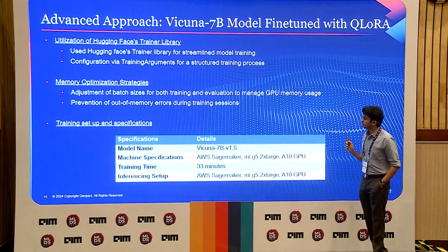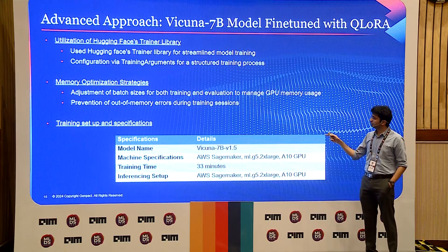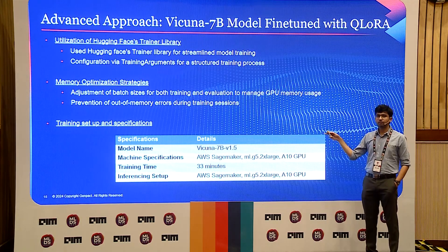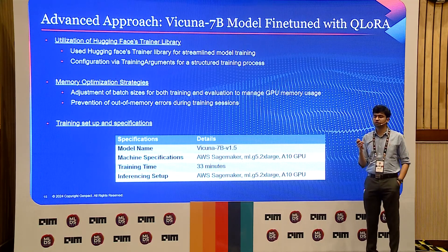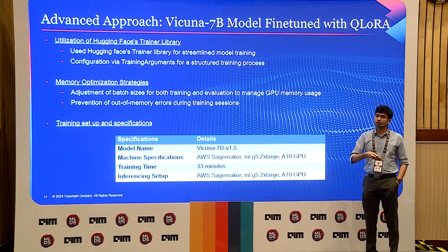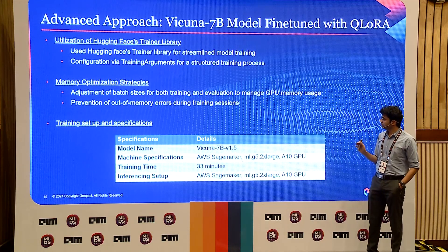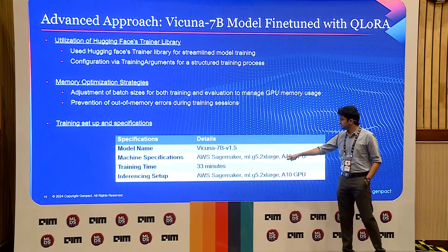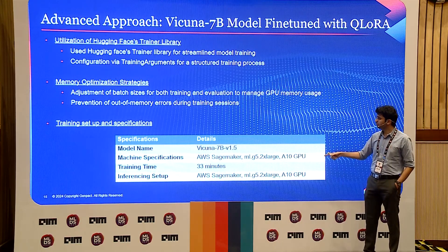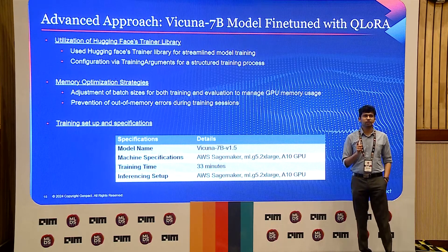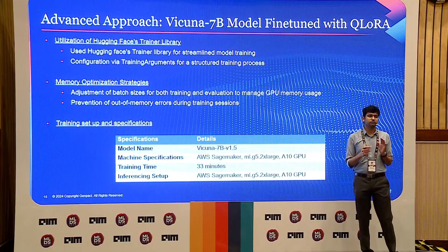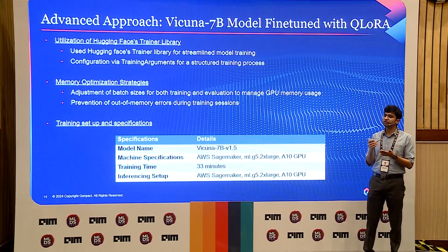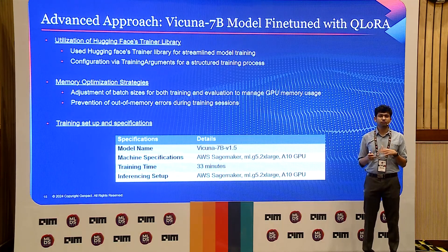This is the training setup we used. We used the Vicuna 7 billion model — and remember, this is the later version which is commercially available, so be careful when using LLMs for fine-tuning as they might be open-domain but not available for commercial usage. We used the ML.g5.2xlarge instance on AWS, which has around 24 GB of VRAM and an A10 GPU. Be careful: experiments on older GPUs will take much more training time and cost much more money.